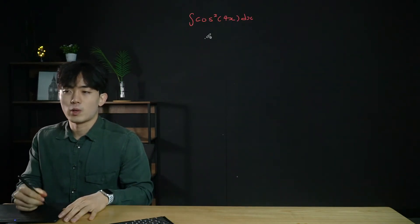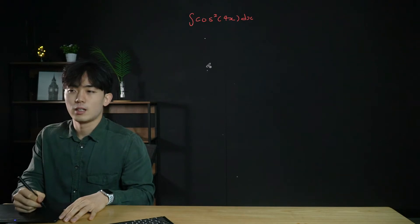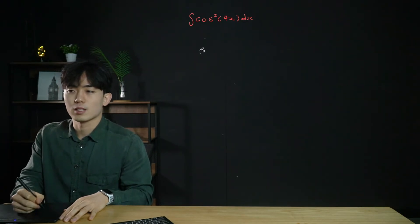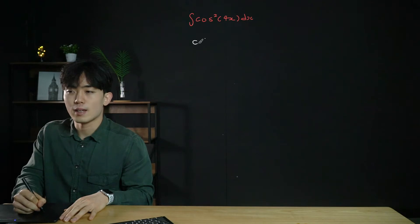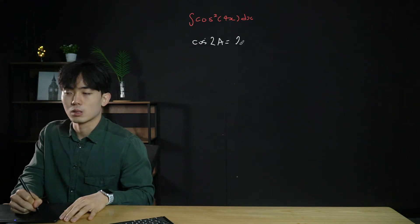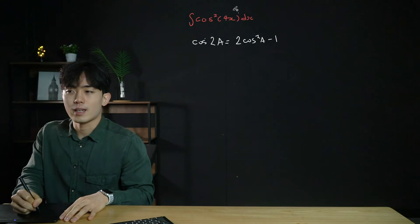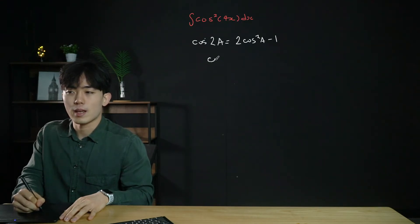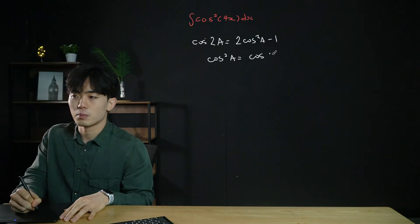Let's look at a cos squared example — the integral of cos²(4x). As before we use the cos 2a double angle formula. In the form for cos squared: cos 2a equals 2cos²a minus 1, we rearrange to get cos²a equals (cos 2a plus 1) all divided by 2.